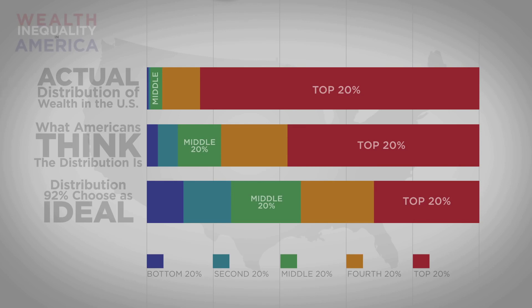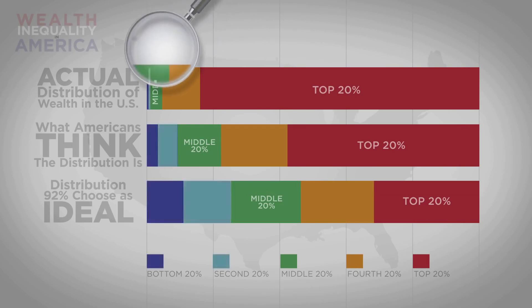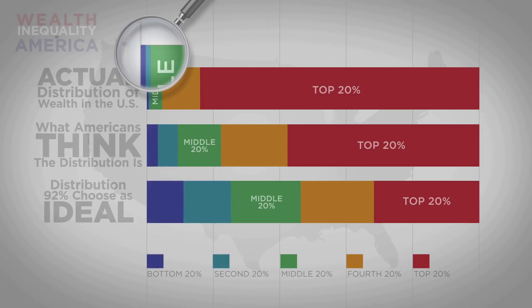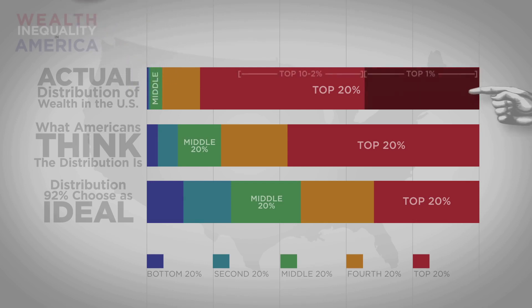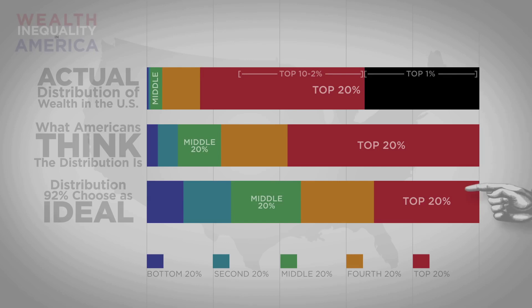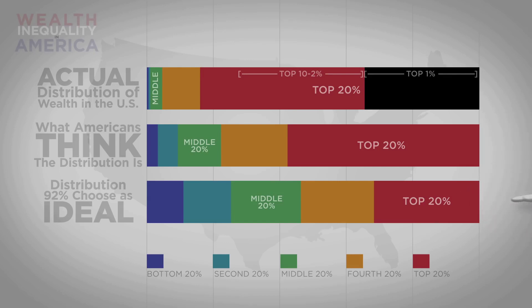Not only do the bottom 20% and the next 20% — the bottom 40% of Americans — barely have any of the wealth; it's hard to even see them on the chart. But the top 1% has more of the country's wealth than 9 out of 10 Americans believe the entire top 20% should have. Mind-blowing.